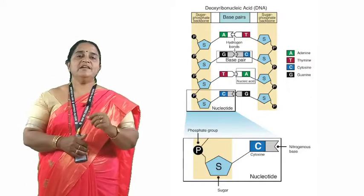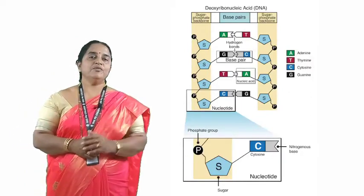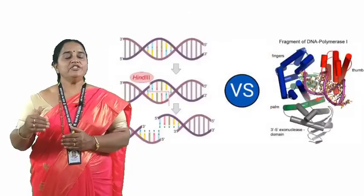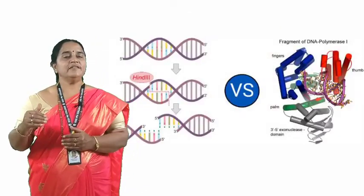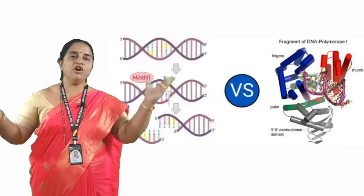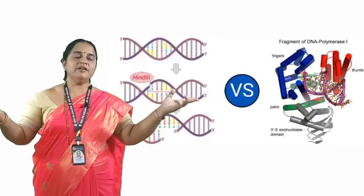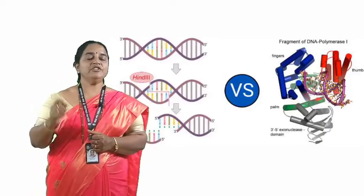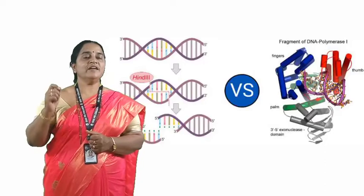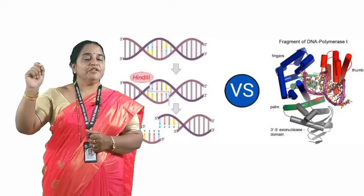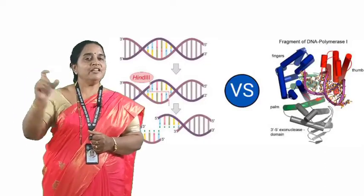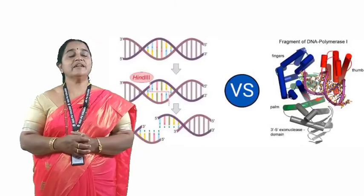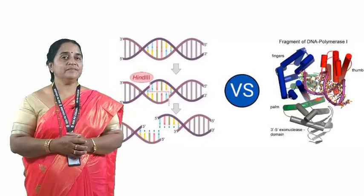Endonucleases are of two types. The enzyme which cleaves the nucleotides from the 5' or 3' end we call exonucleases, and the enzyme which acts as a guided missile restricting the DNA within the molecule we call restriction endonucleases.